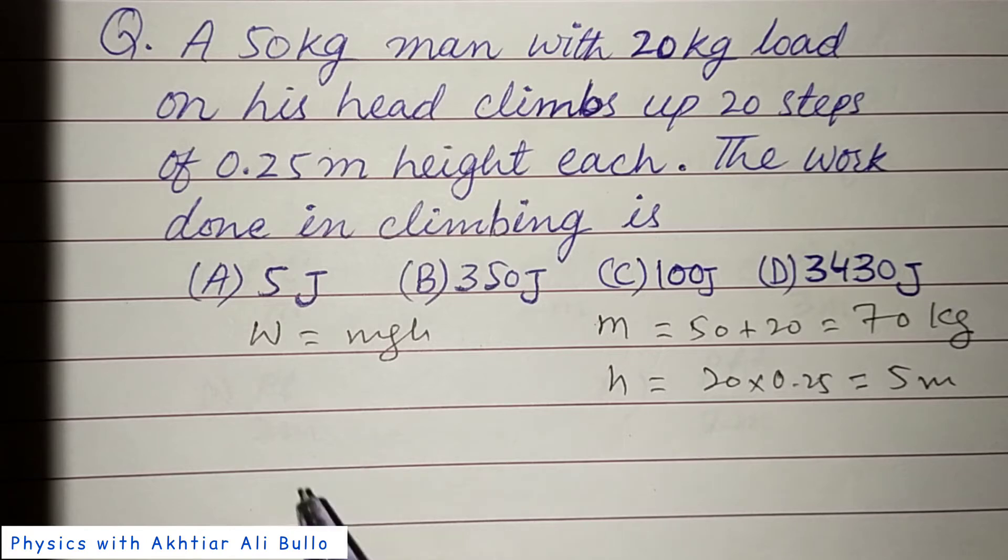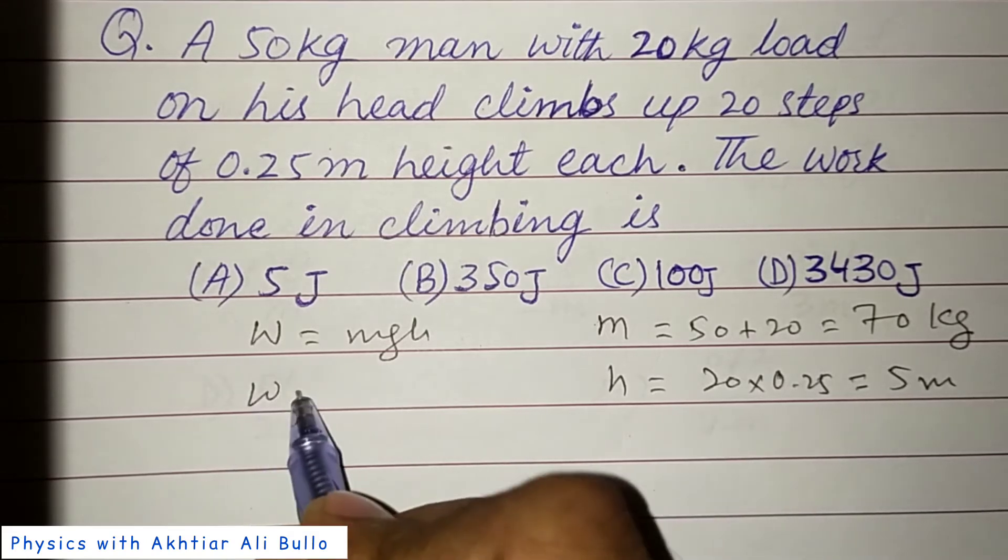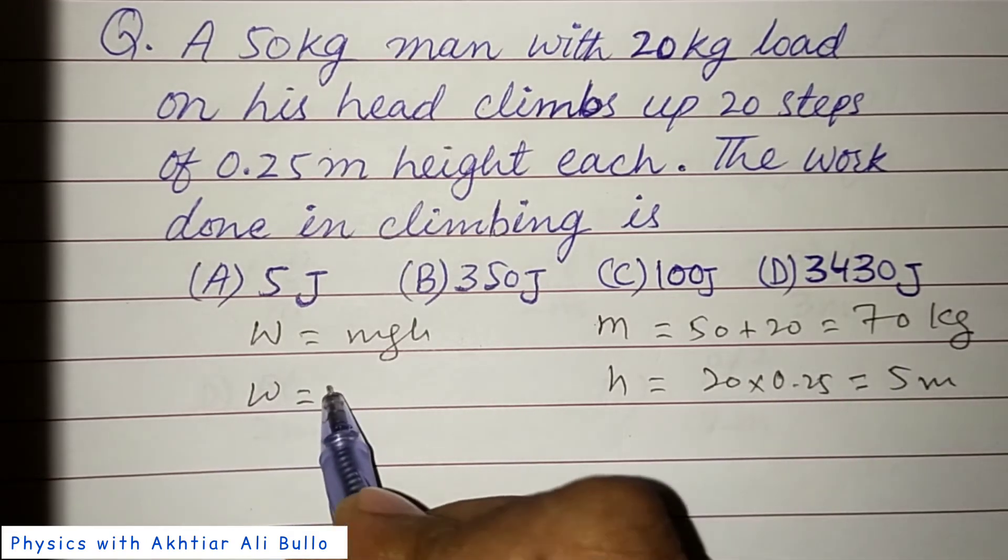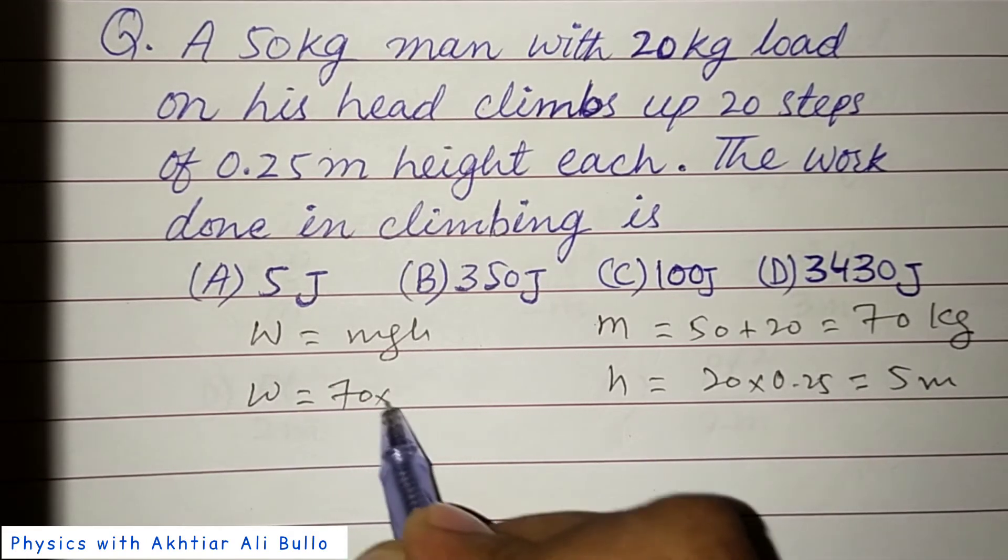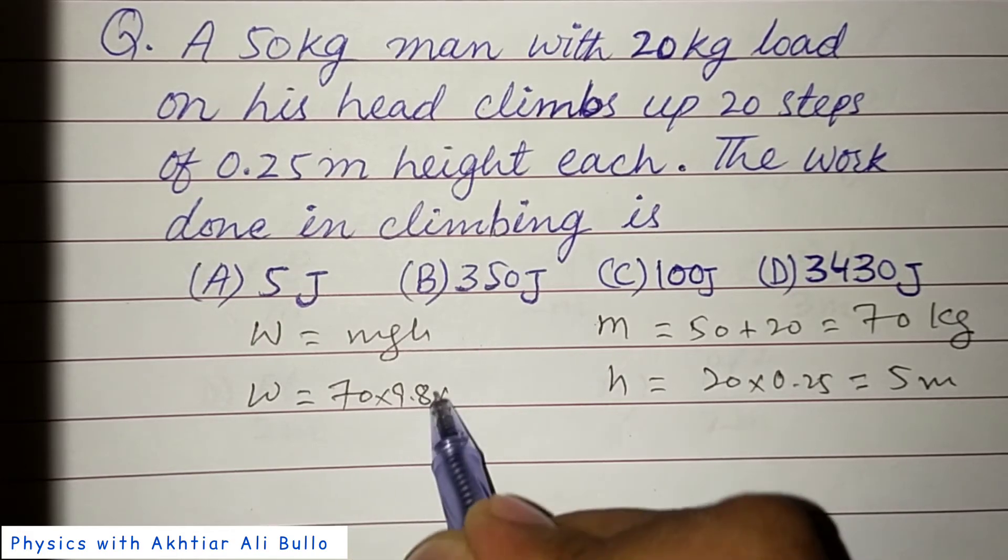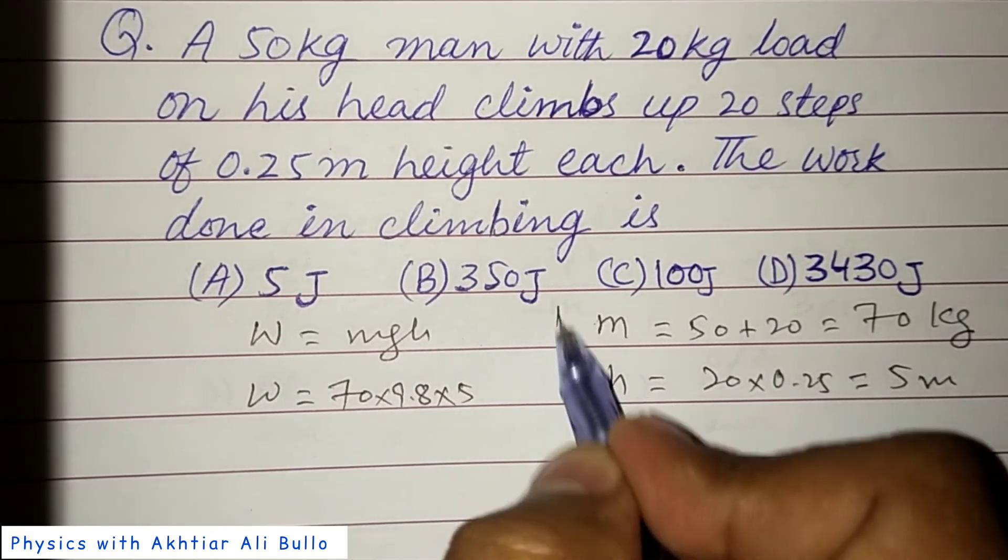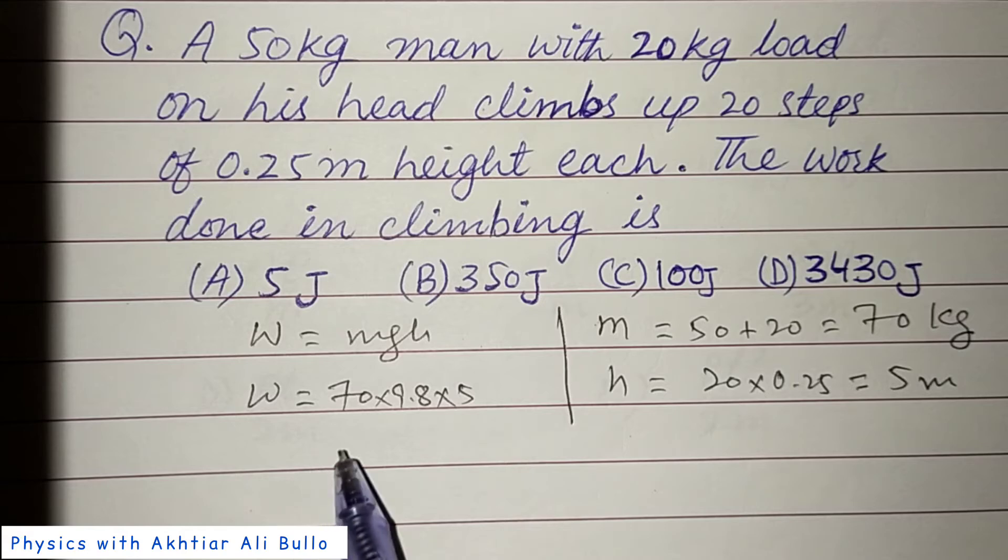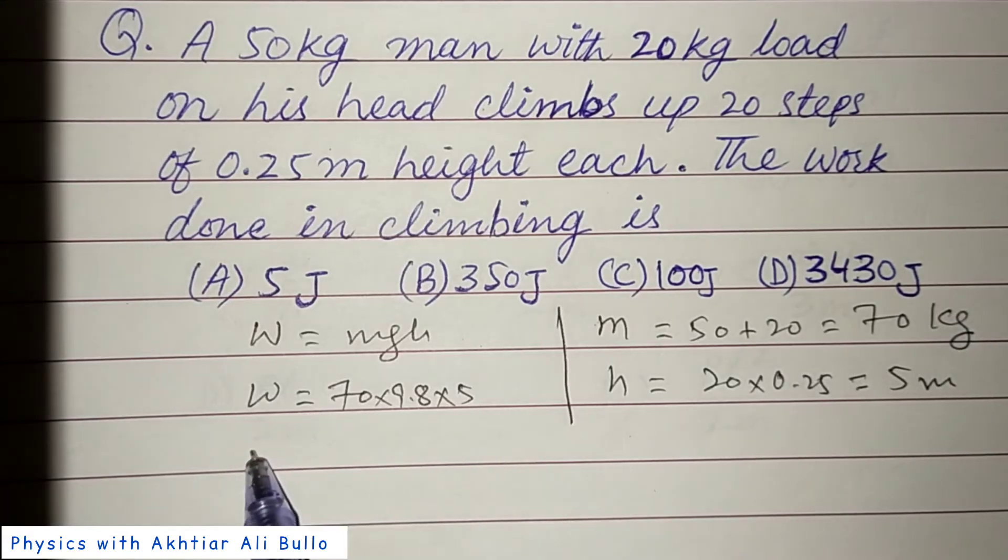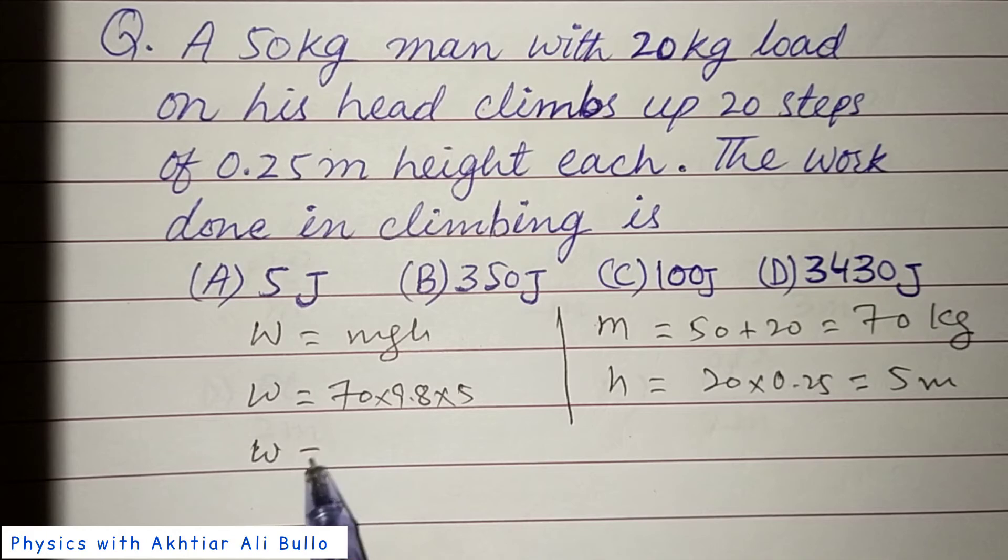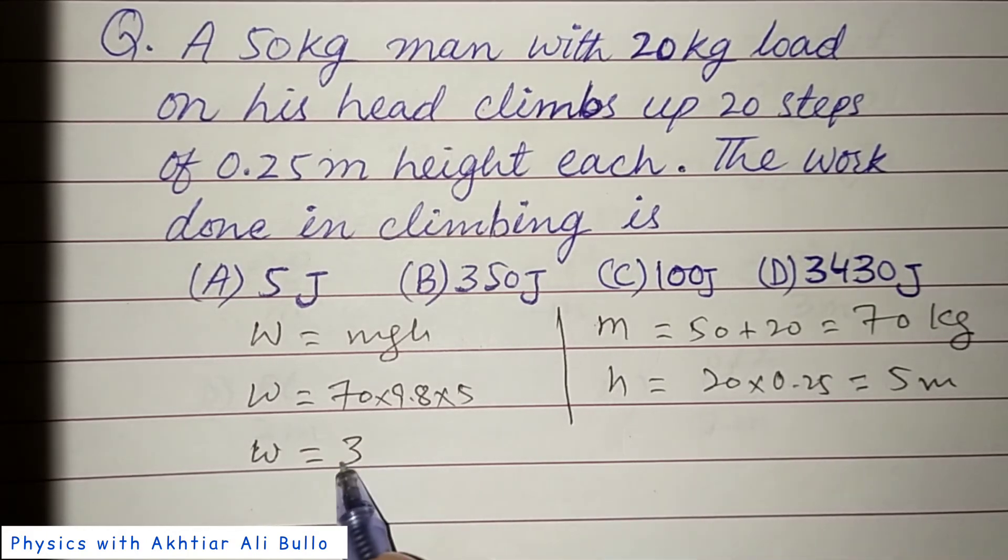Now we will calculate the work done. Work done is equal to total mass 70 into g is 9.8 into height is 5. When we multiply these values, we will get the answer is 3430 joules.